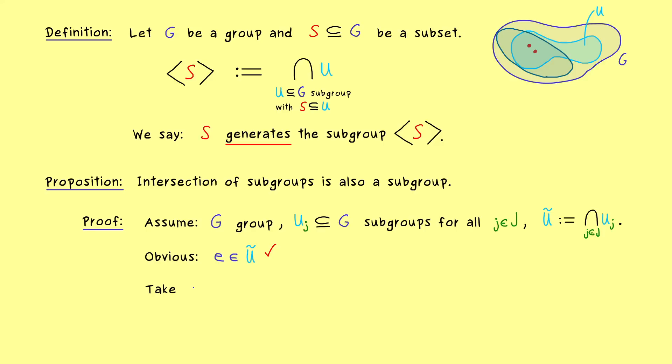So the first thing for a subgroup is already satisfied, we have the identity element in it. And now as always the only thing we have to show is that we cannot leave the subset U tilde with the group operation and the inverse operation. However also that follows immediately from the intersection, because we know we cannot leave the single sets U_J. But by the definition of the intersection we know that we lie in all of the U_Js.